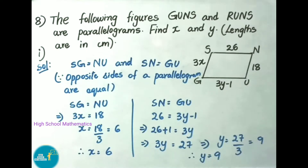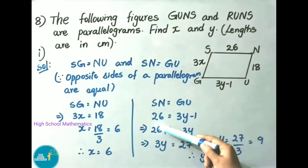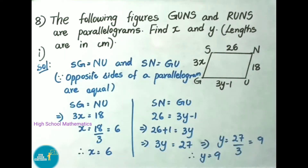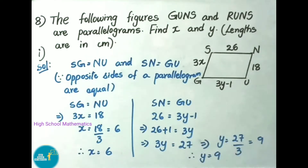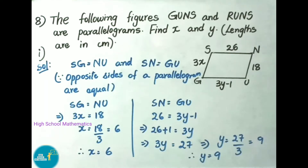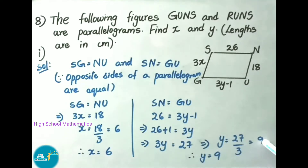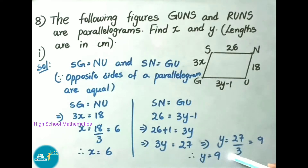Now taking the second pair: SN equals GU. SN is given as 26 centimeters and GU is given as 3y minus 1. Transposing, 26 plus 1 equals 3y, so 3y equals 27, therefore y equals 27 divided by 3, which is 9. So in this question, x value is 6 and y value is 9.